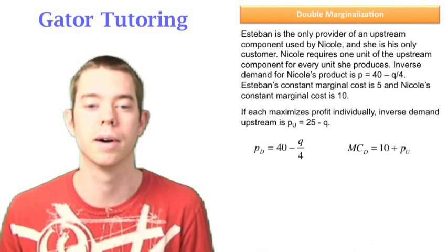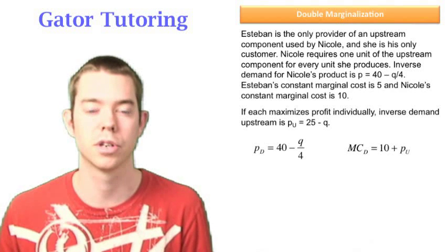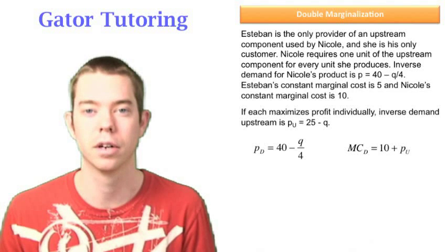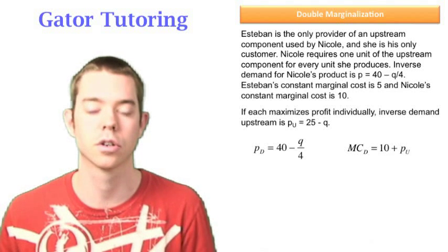We know that that price is something above $5. That's where the problem with double marginalization comes in is they make Esteban's making some profit when he sells his product to Nicole.